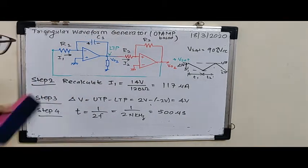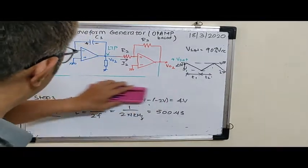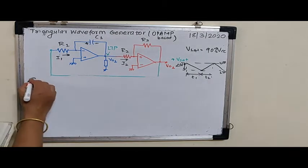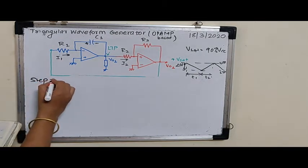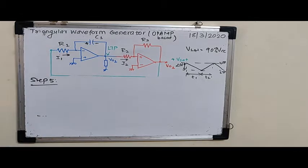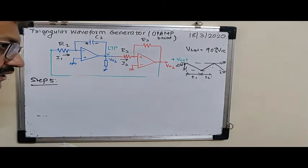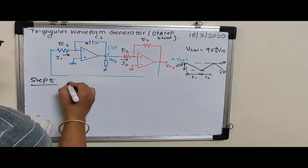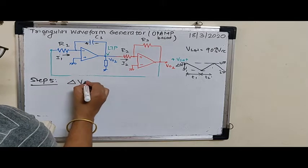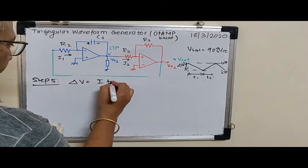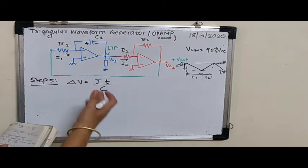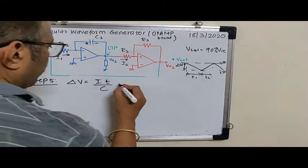Proceeding to the next step. Step 5. Now we will use a simple equation for voltage across the capacitor and the current flowing through it. The relationship is delta V equals current into time divided by the capacitance. This is a quite simple equation which we have seen so many times. Using this equation, I can calculate C1.